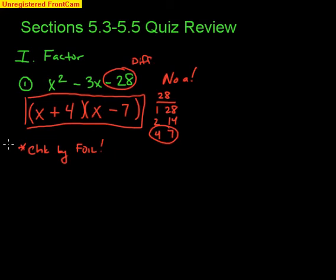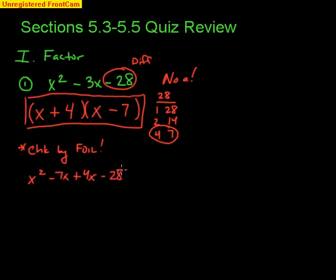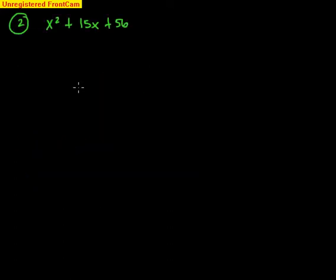You can always check by FOIL. The first: x times x is x squared. The outer: x times negative 7 is negative 7x. The inner: 4 times x is positive 4x. The last: 4 times negative 7 is negative 28. Combining the middle terms: negative 7 plus 4 is negative 3x. That's exactly what we started with, so the factors are correct.